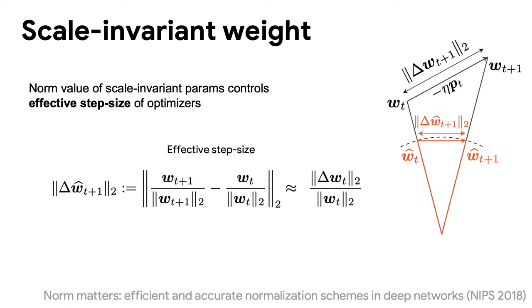A previous study shows that the norm value affects step size of optimizer. When the norm value is large, the effective step size decreases, and when the norm value is small, the effective step size increases.